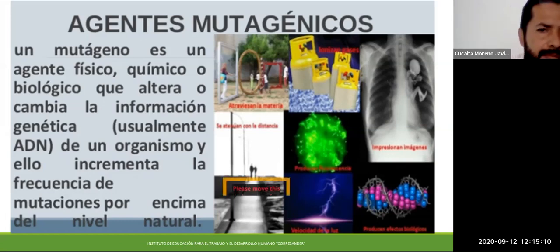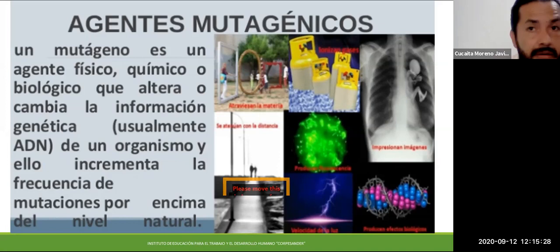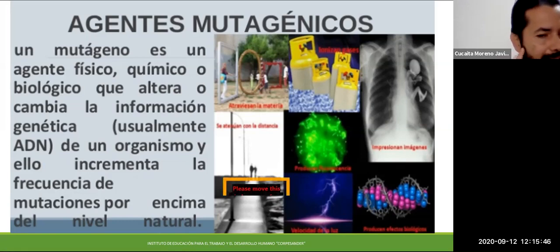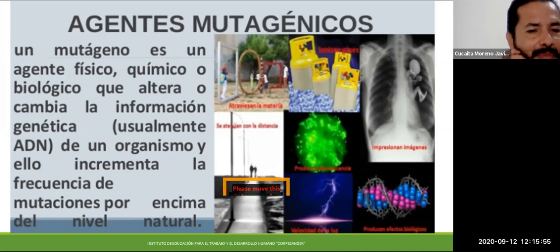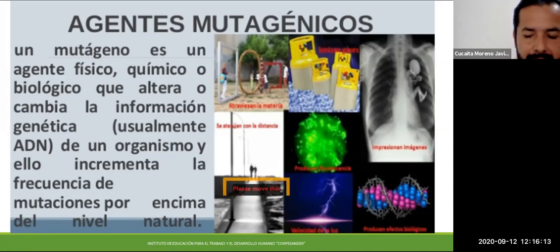Por ejemplo, hace muchos años era raro que hubiera que sacarse las muelas del juicio por falta de espacio. Ahora en esta generación ya se vuelve muy rutinario que a los muchachos les saquen las cuatro molares. Antes el organismo sí tenía el espacio completo. Ahora parece que está disminuyendo nuestro espacio bucal y ya no caben esas muelas. ¿Será que hay una mutación allí? Interesante en nuestro organismo. Tal vez tuvimos un agente físico, químico y biológico que con el tiempo, con las generaciones, está cambiando.